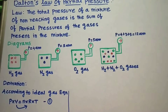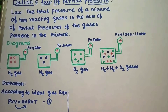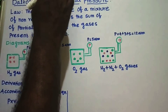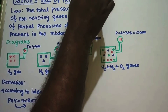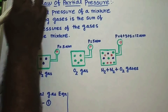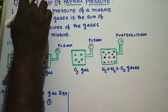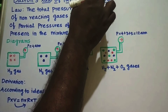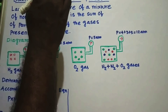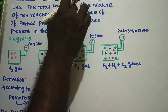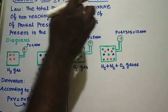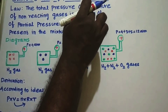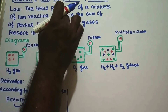Good morning students. Today we are going to discuss an important topic in chemistry: Dalton's law of partial pressure. First of all, we are going to see the law. The total pressure of a mixture of non-reacting gases is the sum of partial pressures of the gases present in the mixture.